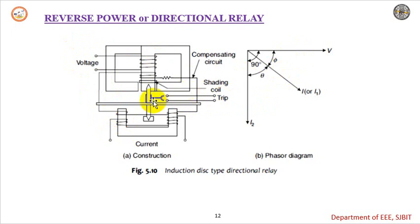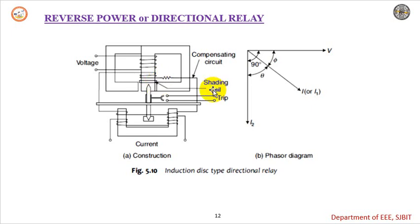But under fault conditions, the angle between voltage and current will be high, so the power factor becomes very poor. The torque will not be sufficient to rotate the disk. Under such conditions, we use an additional compensating winding called a shading coil, whereby we can produce the required amount of torque.